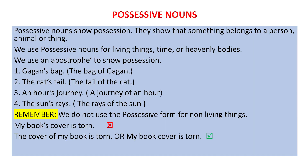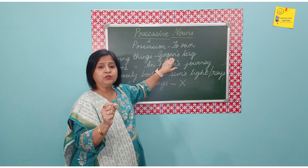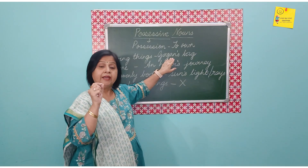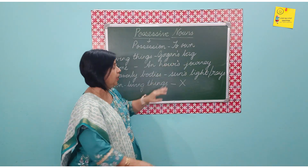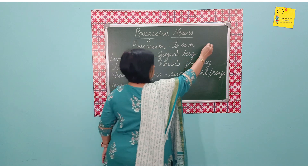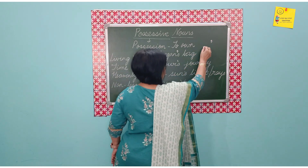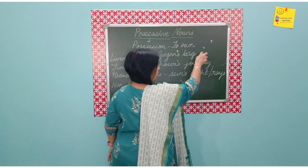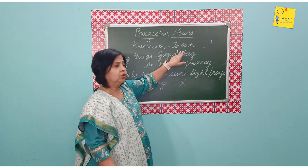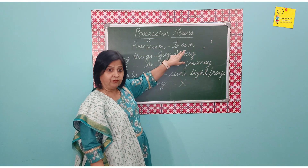For example, instead of saying the bag of Gagan, we can easily say Gagan's bag. This is what is called the possessive noun, and how do we form the possessive noun? We use an apostrophe. This is called an apostrophe — it is like a comma written up above the line.